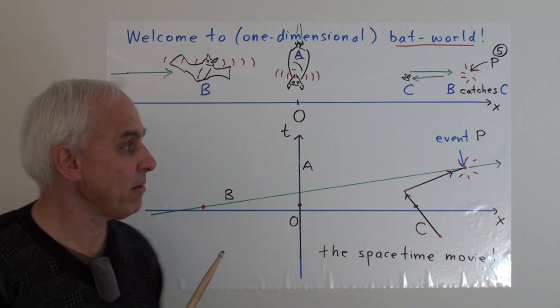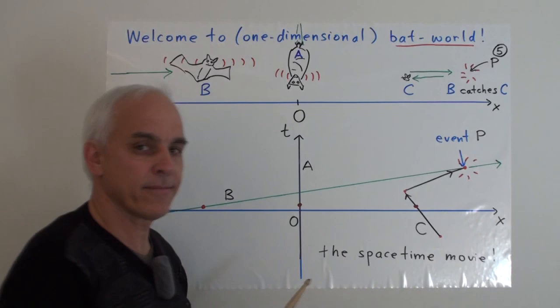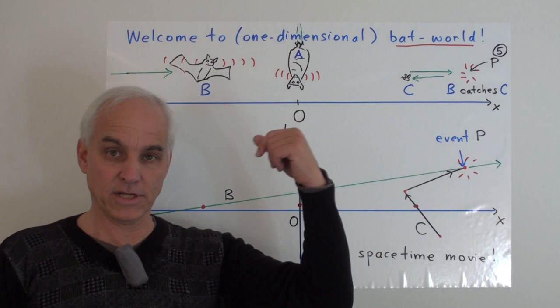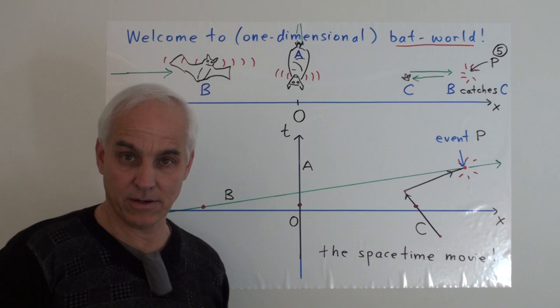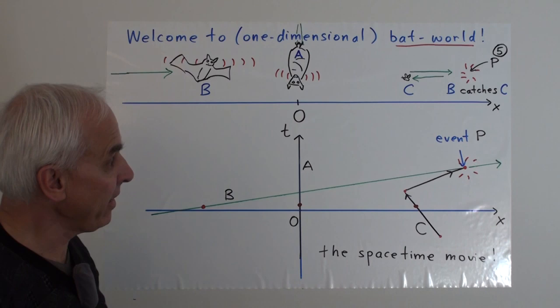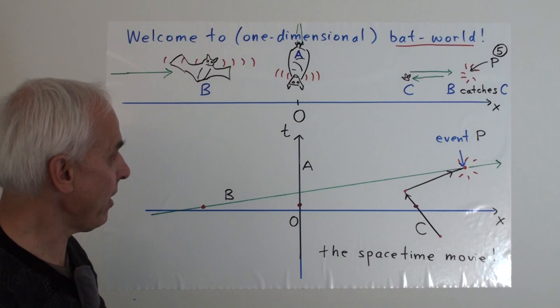And our friend B senses a little bug over here. There's a little bug, which is called C, which is moving in this direction. It does so eventually until it starts sensing that there's a bat coming down the tunnel towards it, at which point it immediately turns around and heads off the other way in somewhat more urgent fashion. But B is a very excellent hunter, and she zips into it very quickly. And right about there, she catches that bug and eats it.